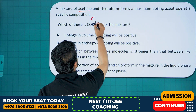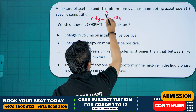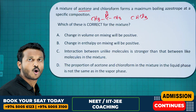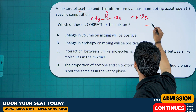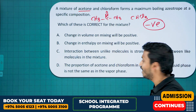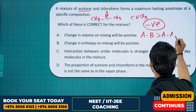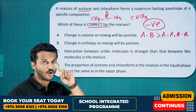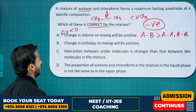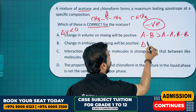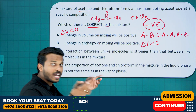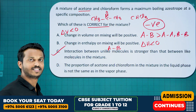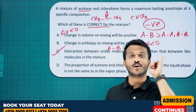A mixture of acetone (propanone) and chloroform (CHCl3) forms a maximum boiling azeotrope. Chloroform and acetone is an example of negative deviation — AB interaction is greater than AA and BB interactions. So the change in volume on mixing is less than zero (not positive), and the change in enthalpy on mixing is also less than zero. Option C is correct: interaction between unlike molecules is stronger than between like molecules.